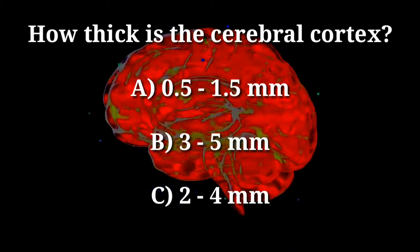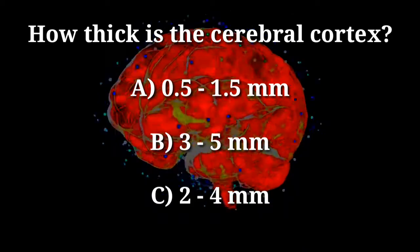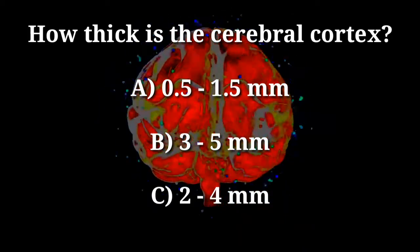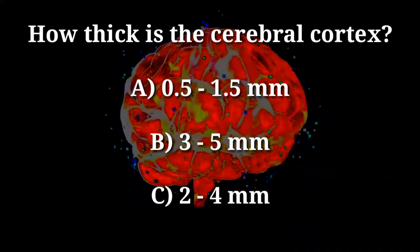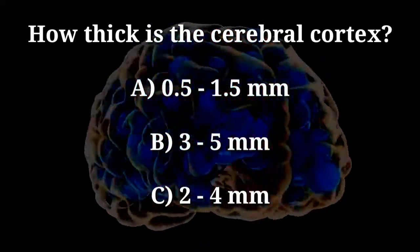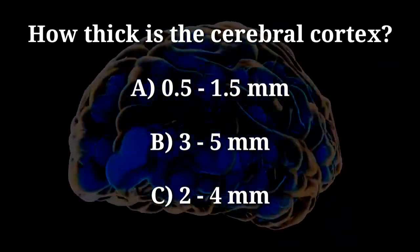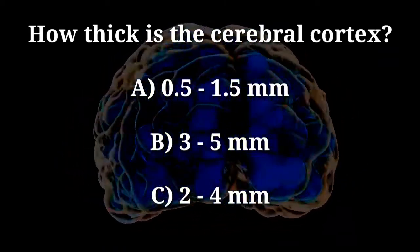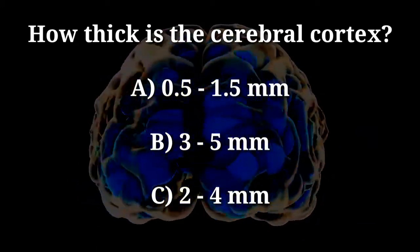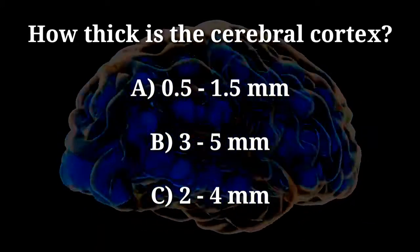How thick is the cerebral cortex? A. 0.5 to 1.5 mm. B. 3.5 mm. C. 2.4 mm.